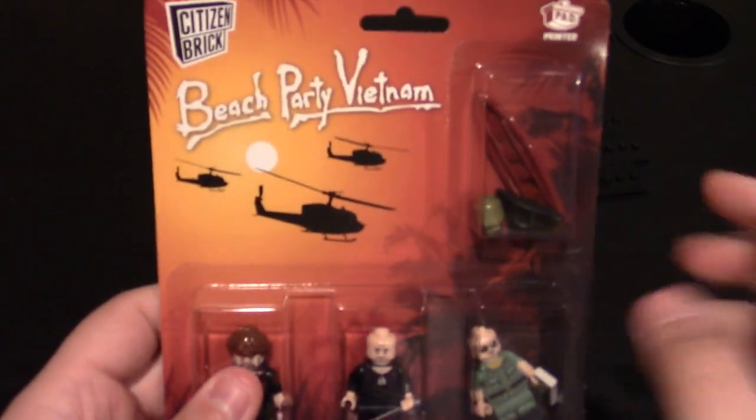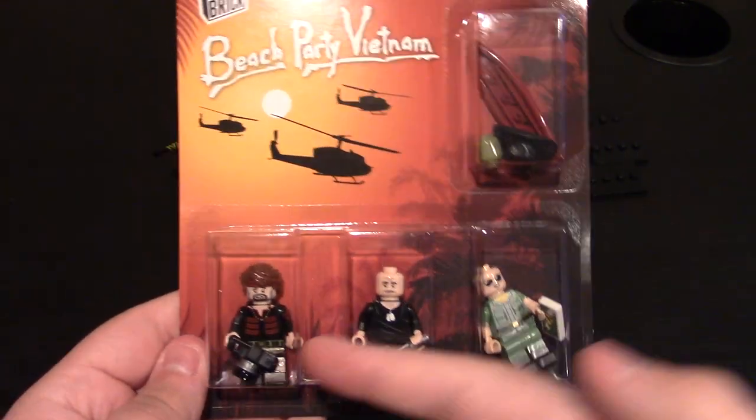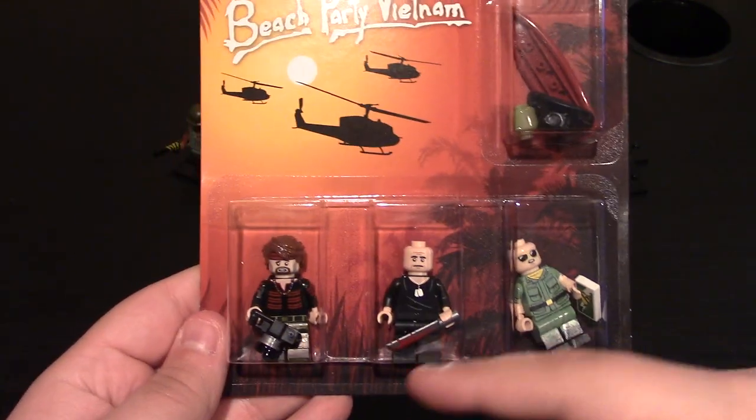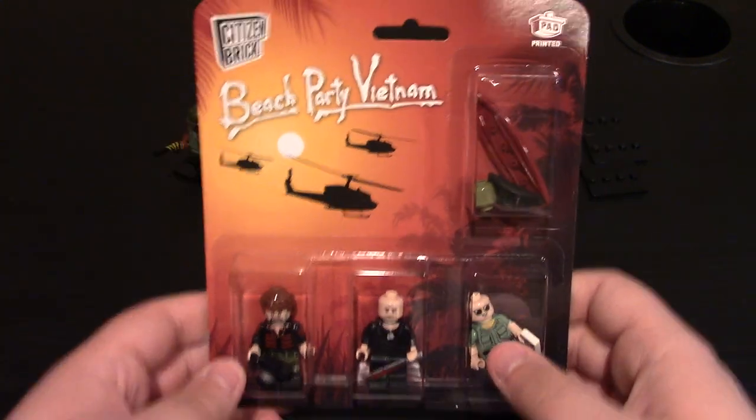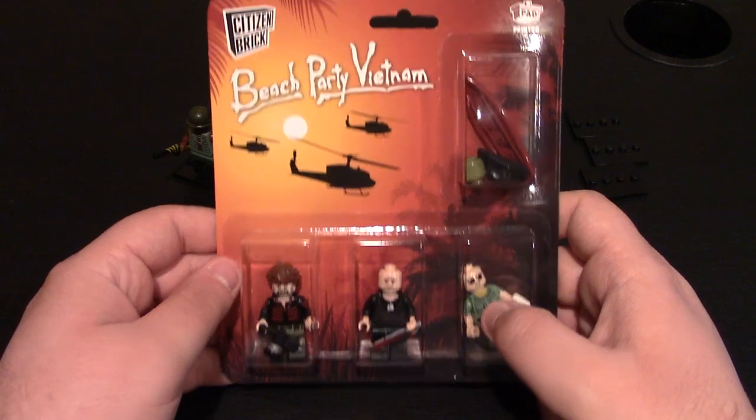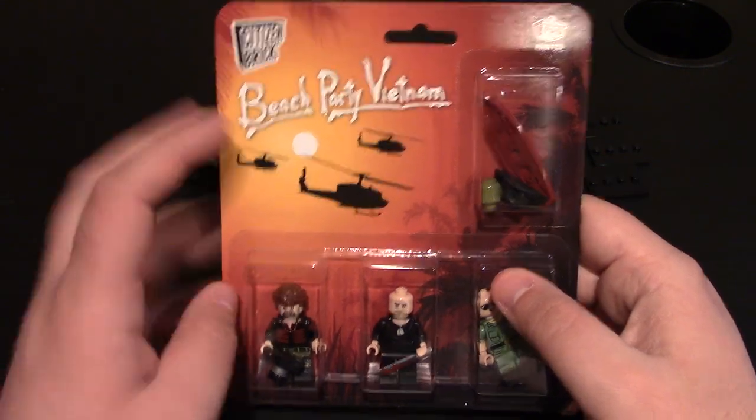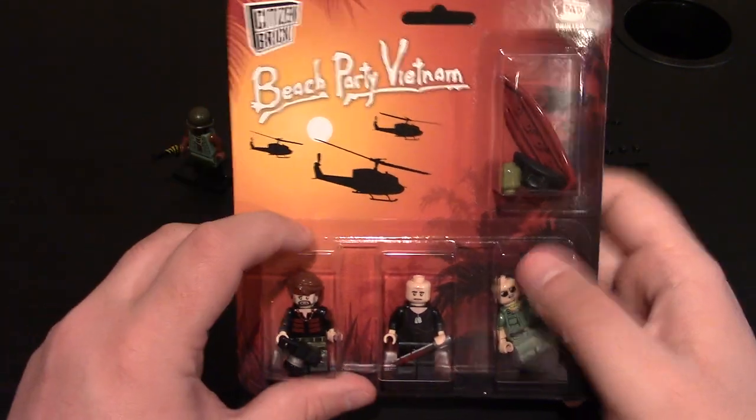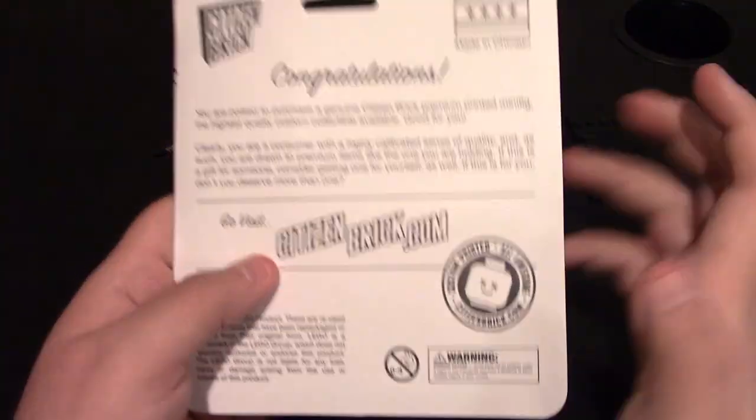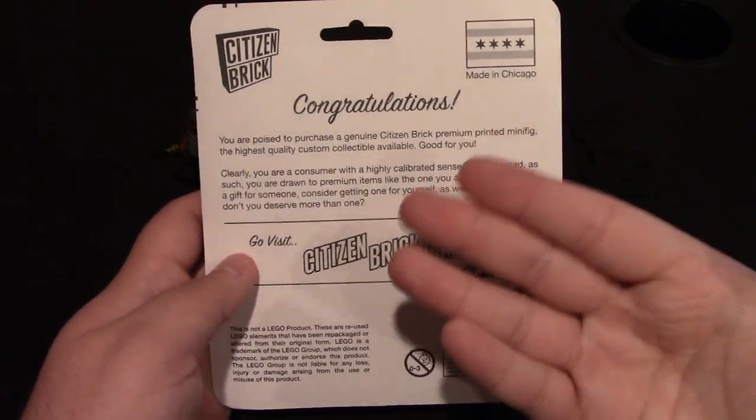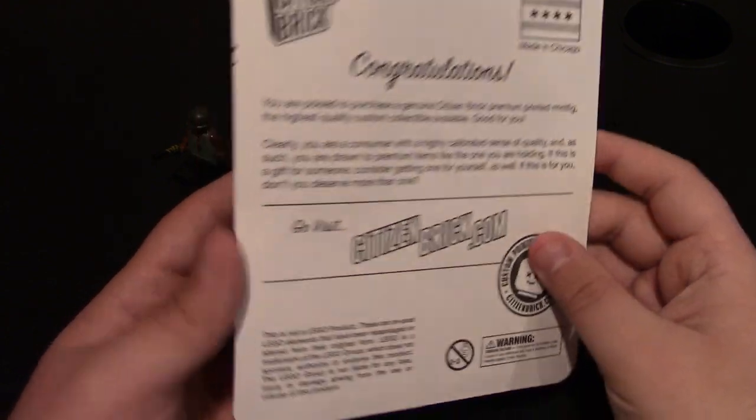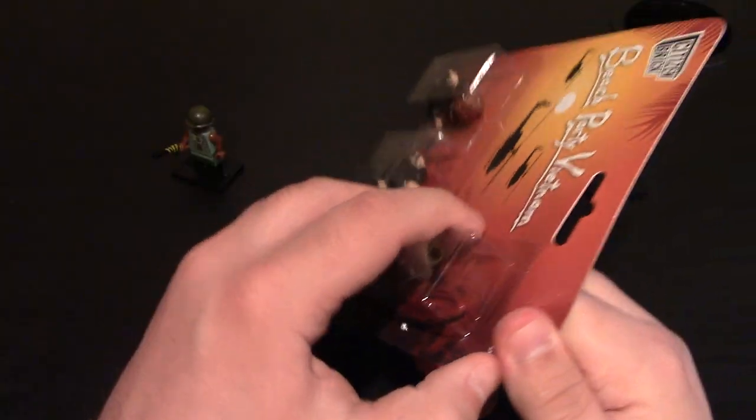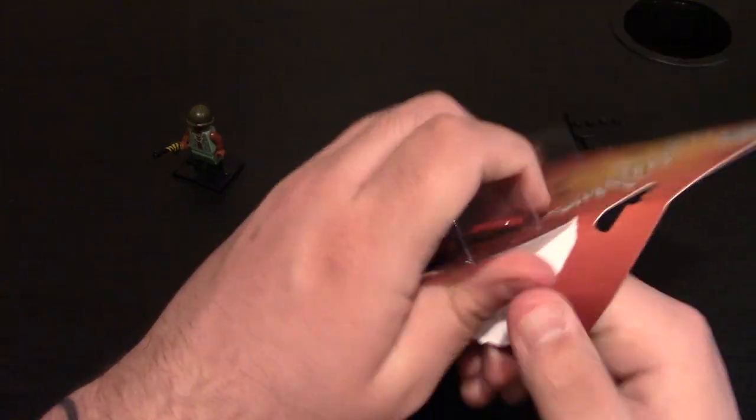Now onto the figure pack itself. This is the Beach Party Vietnam, a figure pack that comes with three minifigures, a bunch of accessories, some printed weapons and other pieces. Their packaging is nice as always, logos up here, pad printed. I really like the background for the packaging. You know me, we got to open it up because I'm like that.